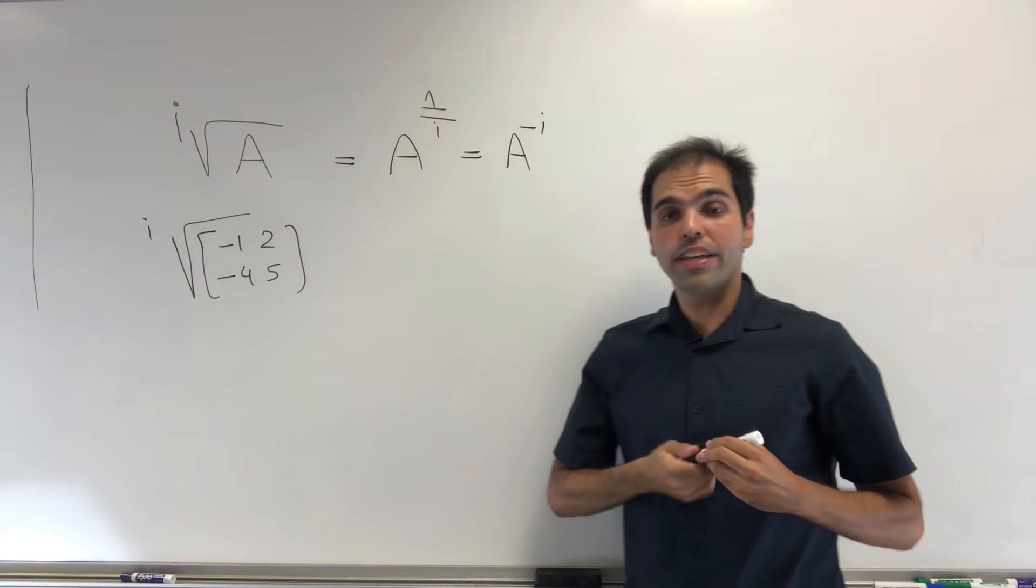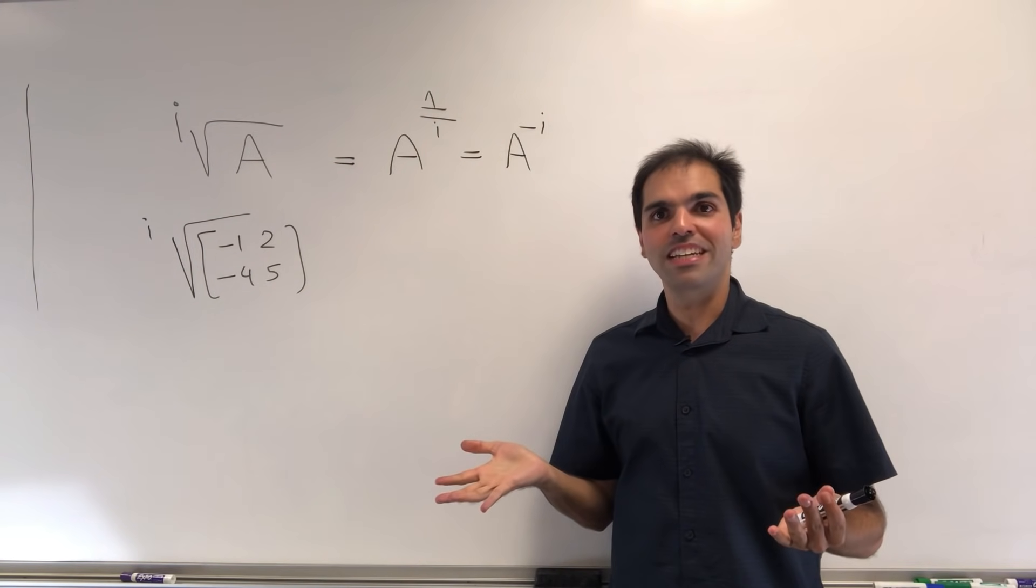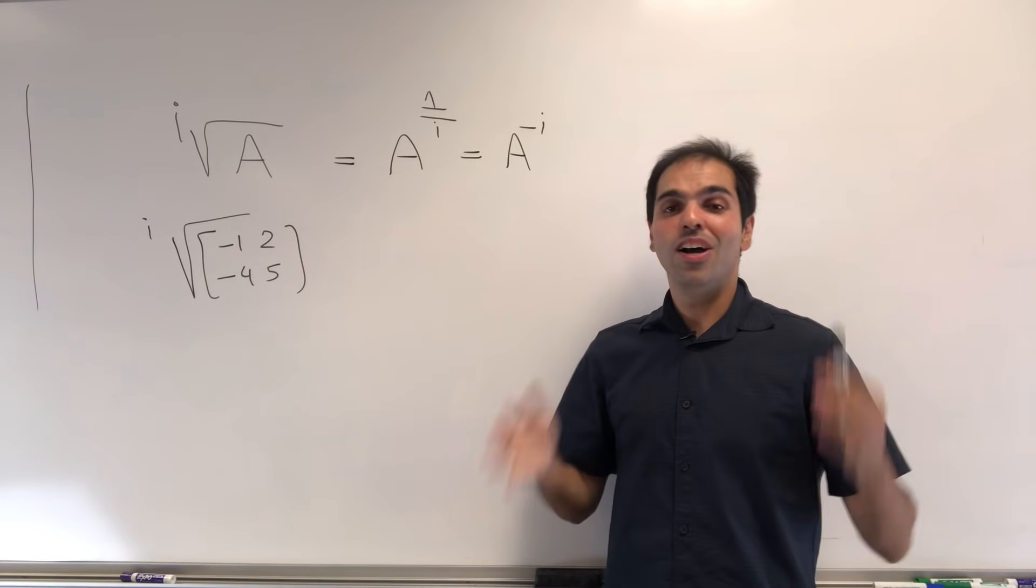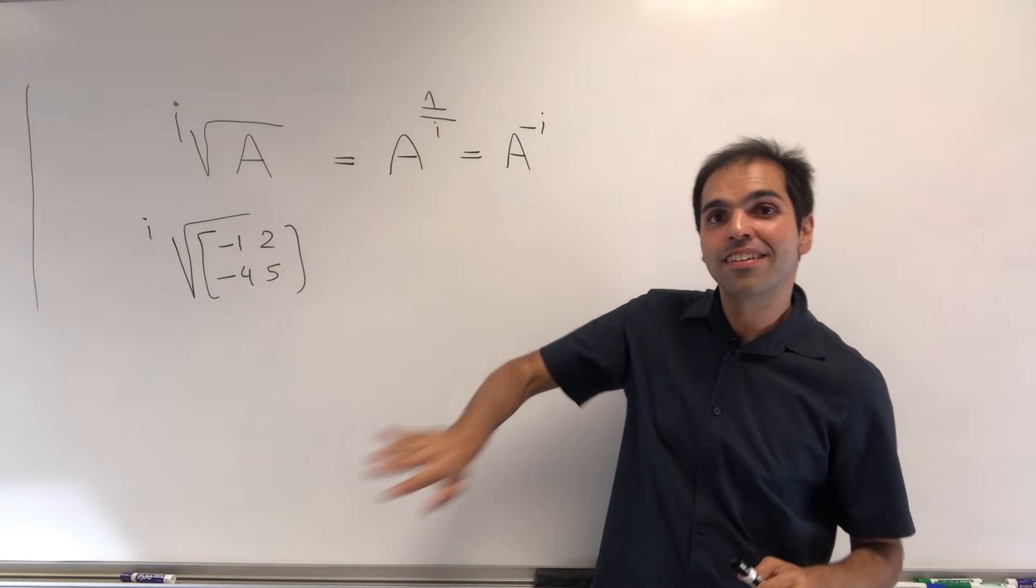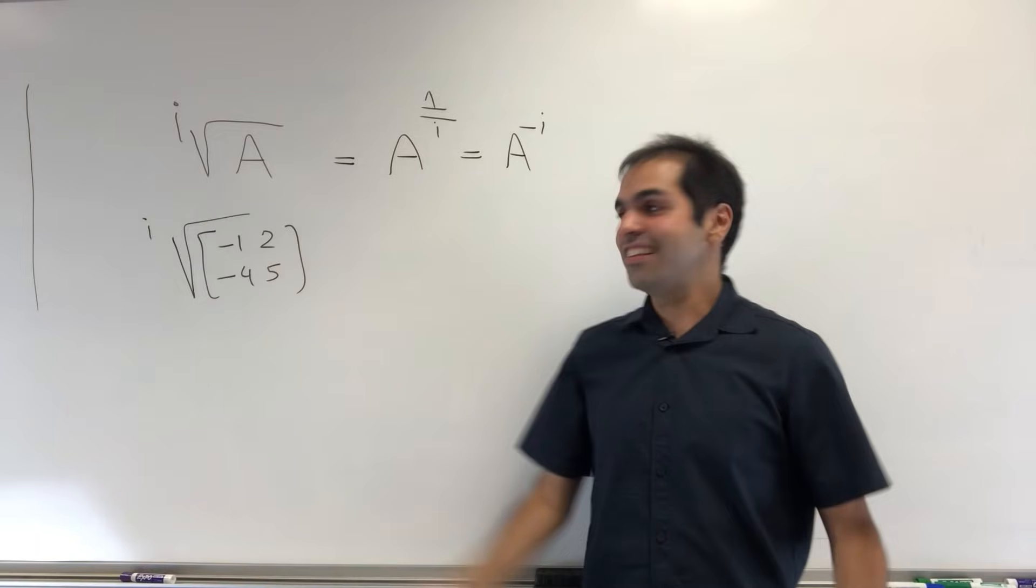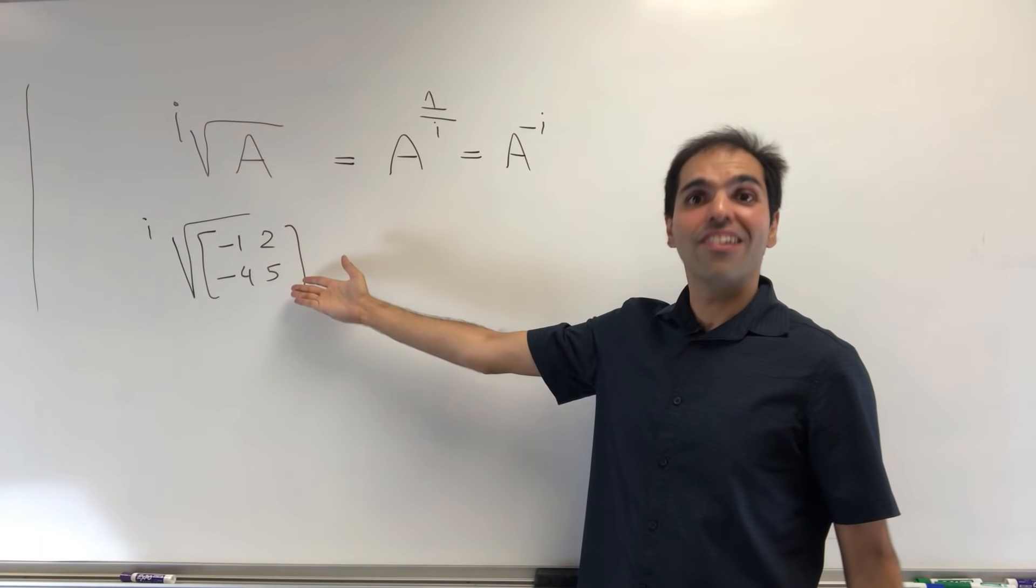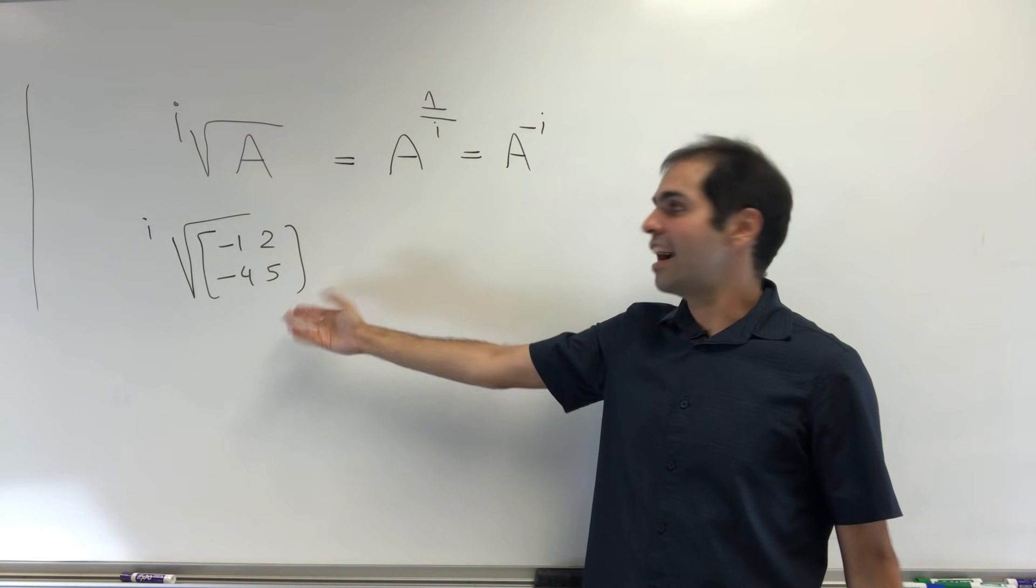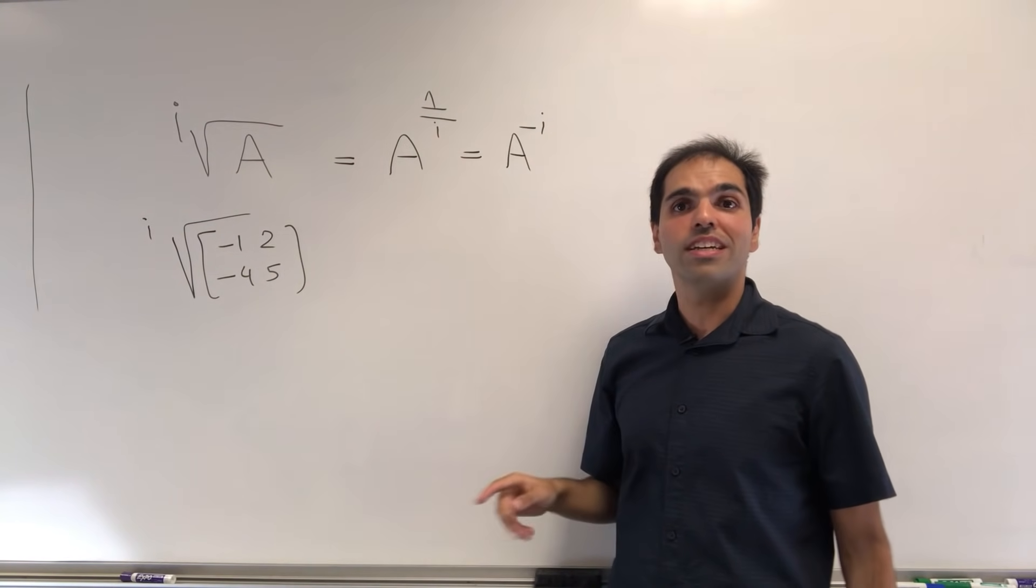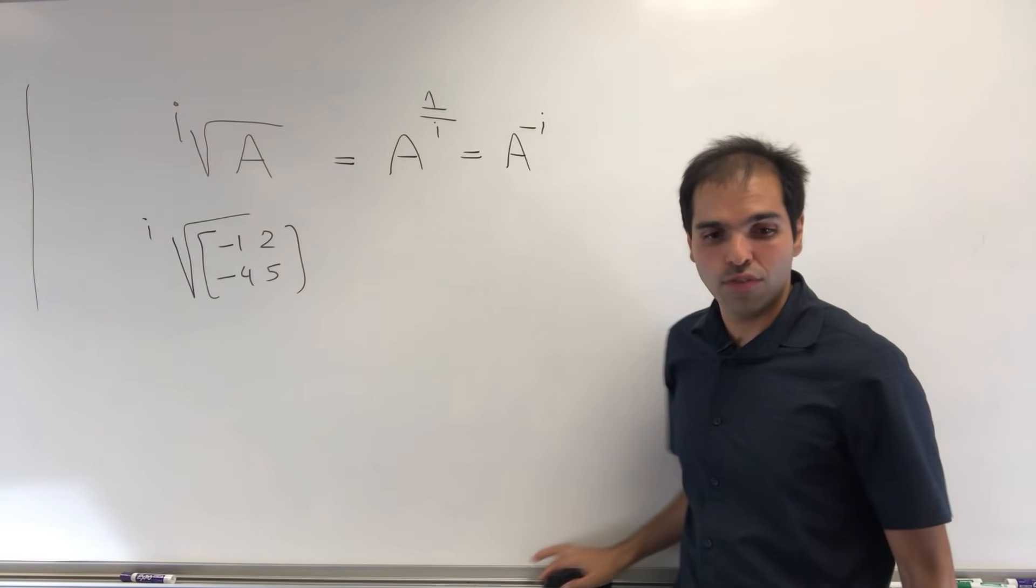Now how do you calculate crazy powers of matrices like A to the minus i? Well, the answer is eigenvalues. So in particular, let's calculate the eigenvalues and eigenvectors of the matrix [-1, 2; -4, 5].